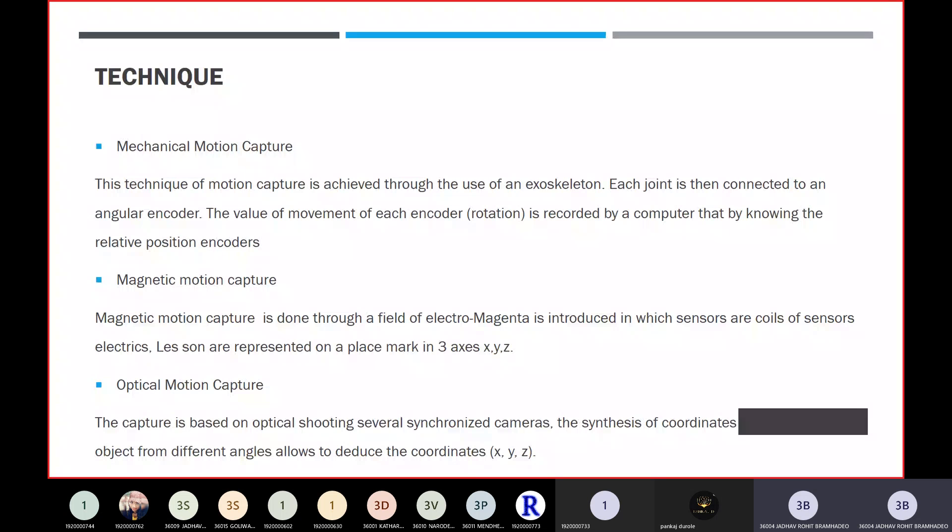The sensor generates an electromagnetic field which can create three axes, XYZ, and with that, animation in 3D can be generated. The third technique is optical motion capture. The capture is based on optical shooting with serial synchronized cameras. The synthesis of coordinates XYZ of the same object from different angles allows reducing the coordinate. Basically, in optical motion capture, they use cameras placed on the wall. The optical motion capture can point out two axes, XY, and with that captured data, it can generate the third axis, Z axis. By generating the three XYZ axes, they can process their animation.